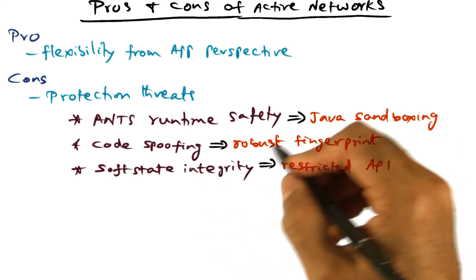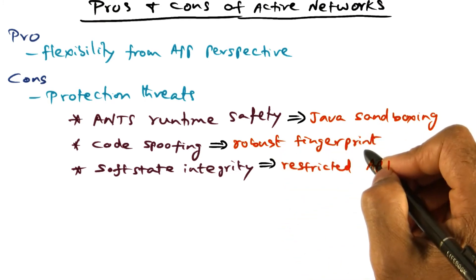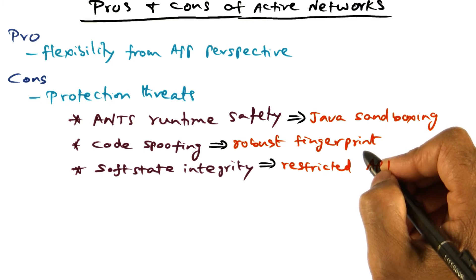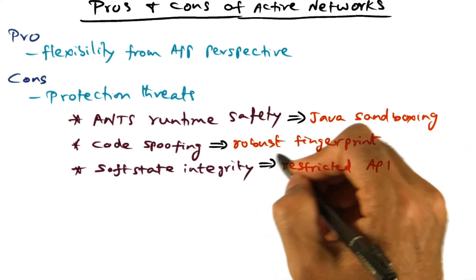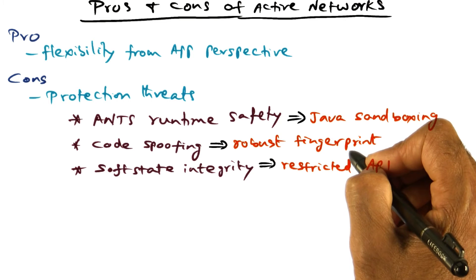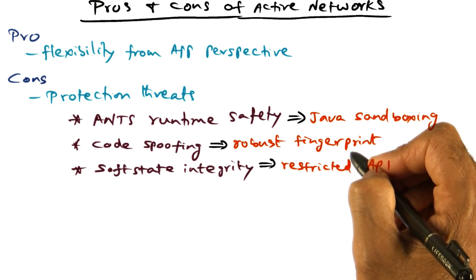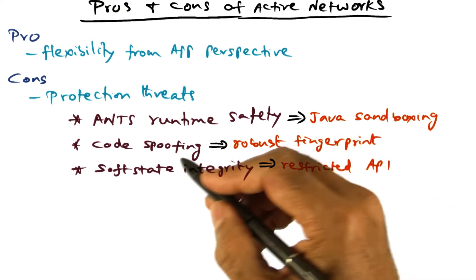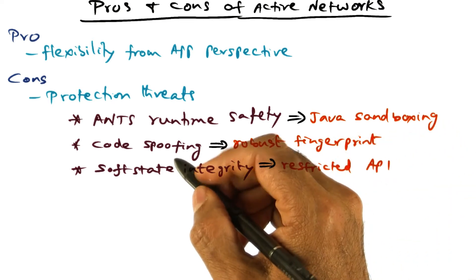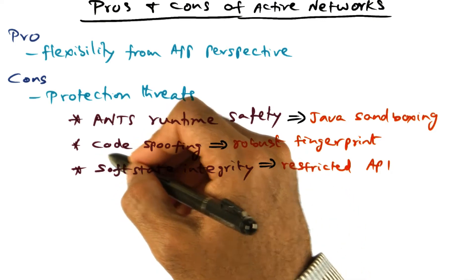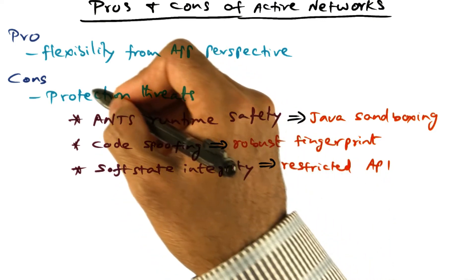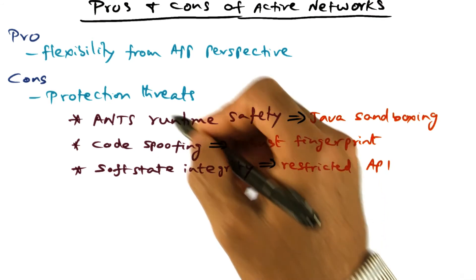Well, here, the safeguard is making sure that you have a robust fingerprint associated with the code. And so what you do is you generate a type field for the capsule that is a cryptographically strong fingerprint of the original code, and you're always matching. When you get the code from a previous node in response to your request, you're going to compute the fingerprint once more, check it against the fingerprint that is contained in the capsule, ensure that there is no code spoofing happening. That's how you can overcome this protection threat.